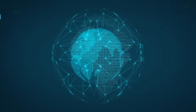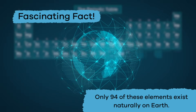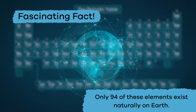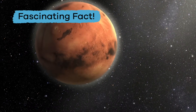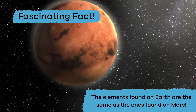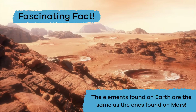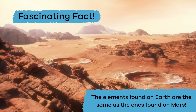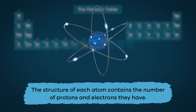Want to know a fascinating fact? Only 94 of these elements exist naturally on Earth. And here's another fascinating fact: the elements found on Earth are the same as the ones found on Mars. Cool, right?